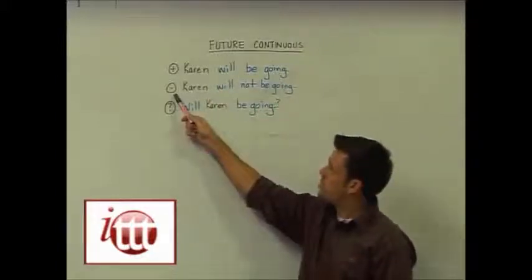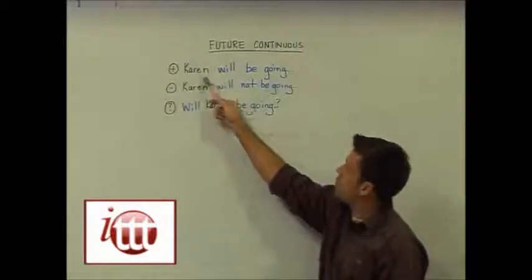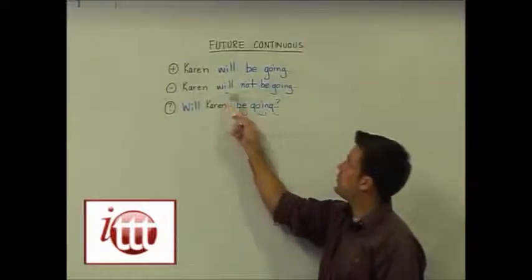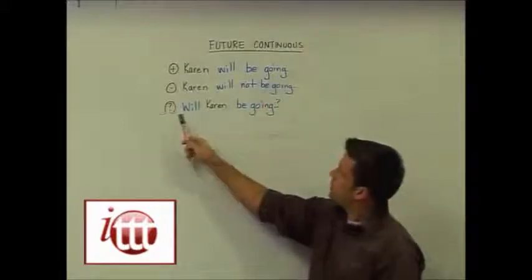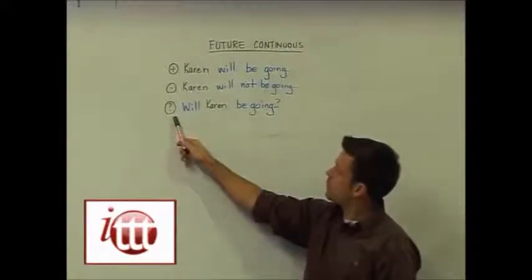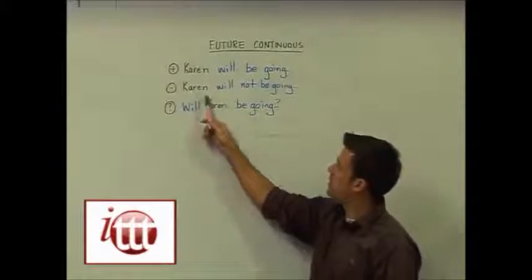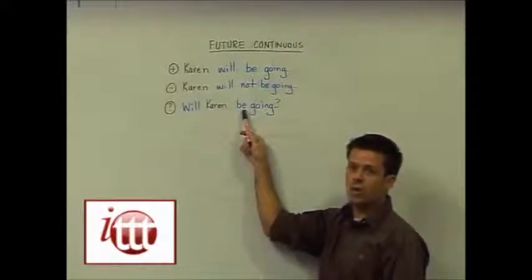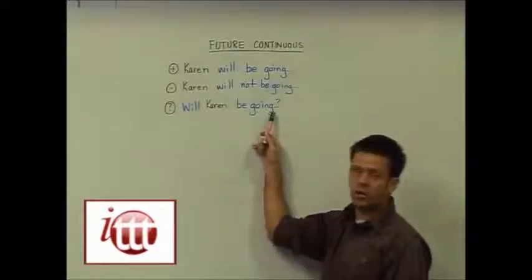In order to create the negative form, we keep our positive form but add 'not' in between 'will' and our helping verb 'to be.' Finally, we ask our question by beginning with 'will,' then we have our subject, being sure to include our helping verb and the present participle. Will Karen be going?